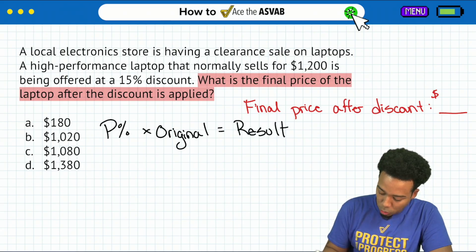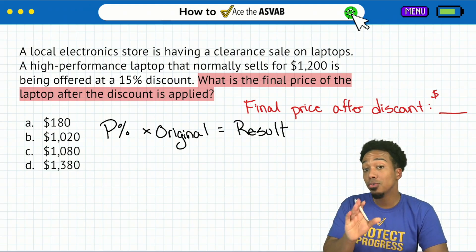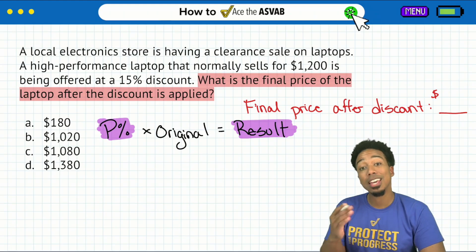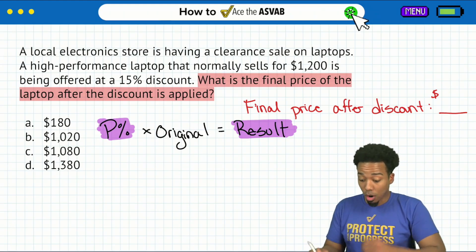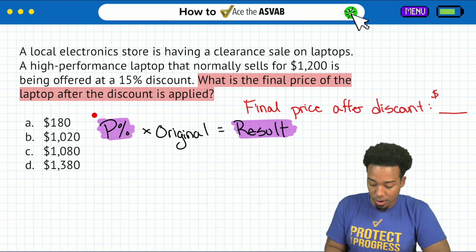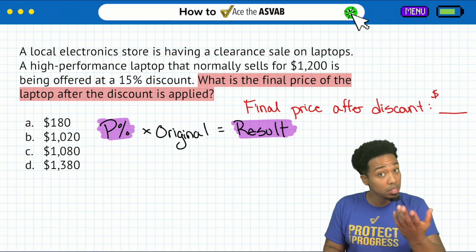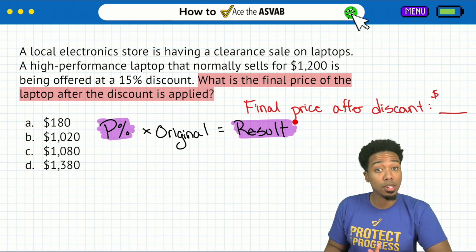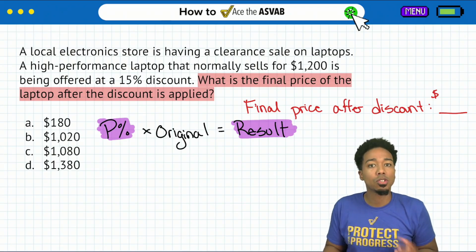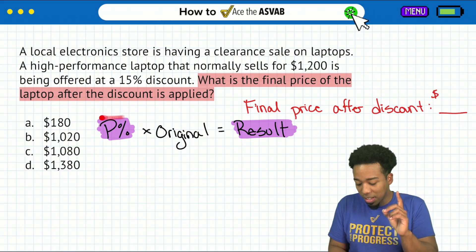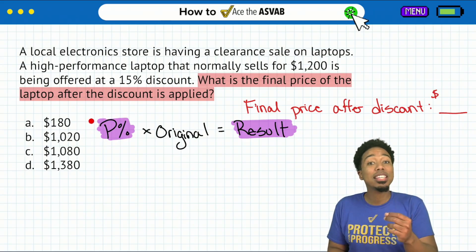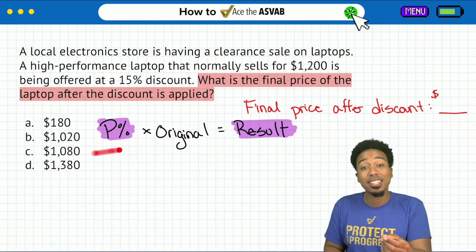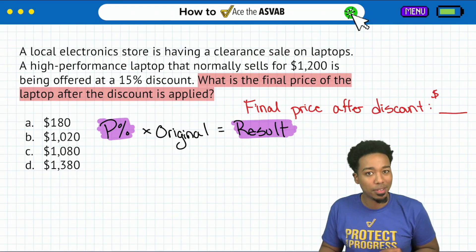The main idea — please write this down — is that the percent you apply is the result that you get. So if you plug in 15% here, what does that 15% represent? The discount, right? So what is the result going to represent? It's going to represent the amount of the discount. If I plug in 15%, I am learning what that discount is — the result is the dollar amount of the discount.